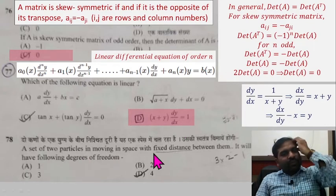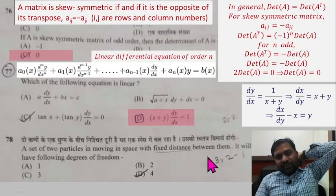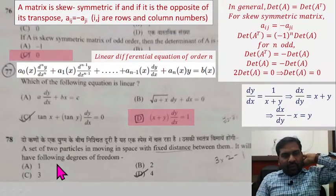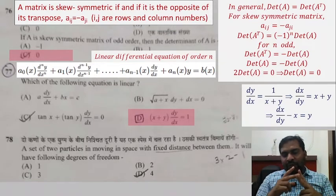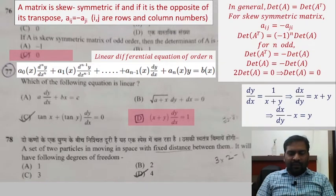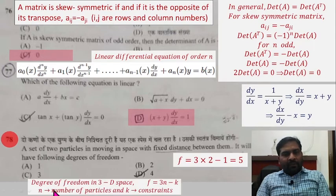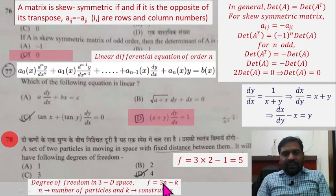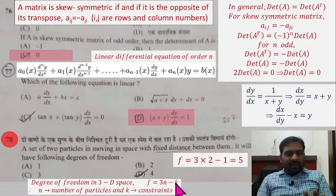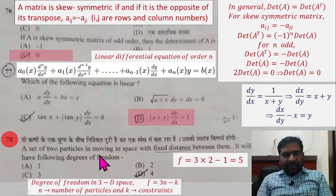Question 78: A set of two particles is moving in space with a fixed distance between them. What is the degree of freedom? The formula for degree of freedom in 3D space is 3N minus k, where N is number of particles and k is the number of constraints. Here, 2 particles with 1 constraint (fixed distance): 3×2 − 1 = 5 degrees of freedom.